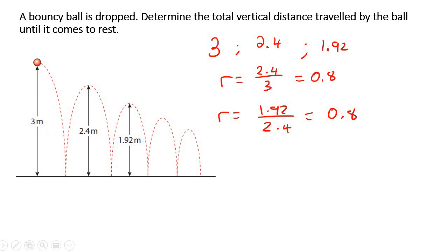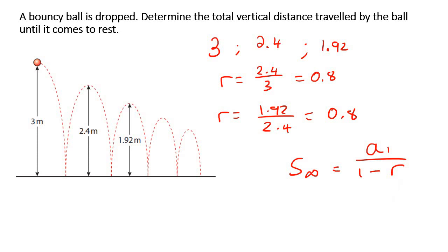I said that we don't know how many times this ball is going to bounce, but that doesn't matter. Because in the previous lesson, we learned about the sum to infinity, which only requires us to know the first term and the ratio. We know that the ball is eventually going to stop — that's obvious. So this is where the sum to infinity is really beautiful.